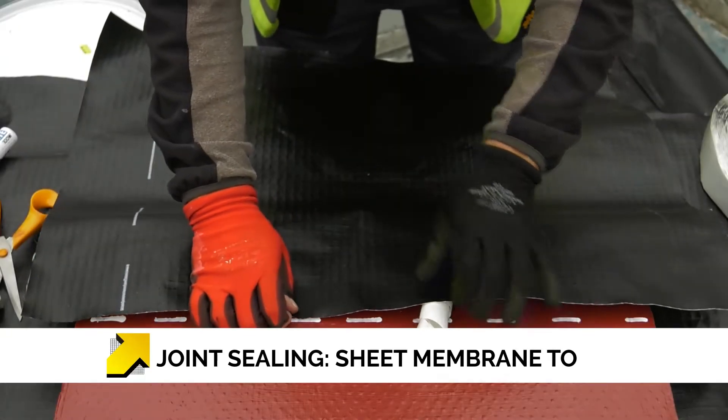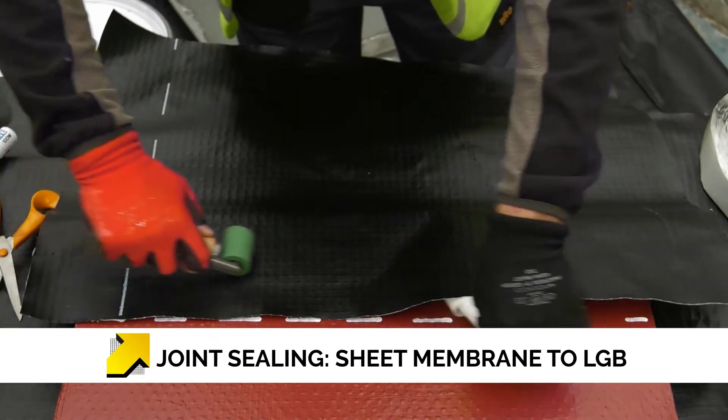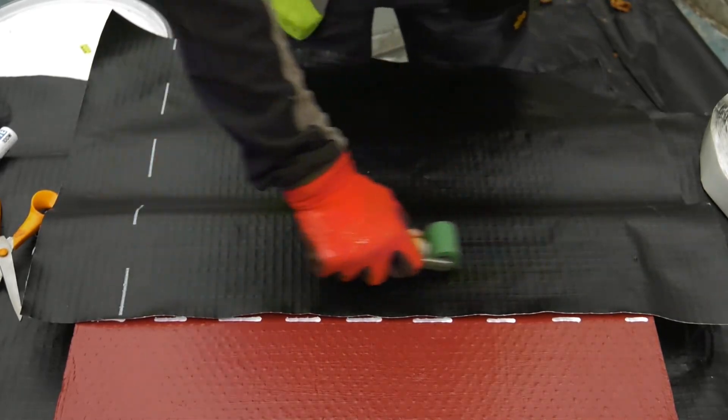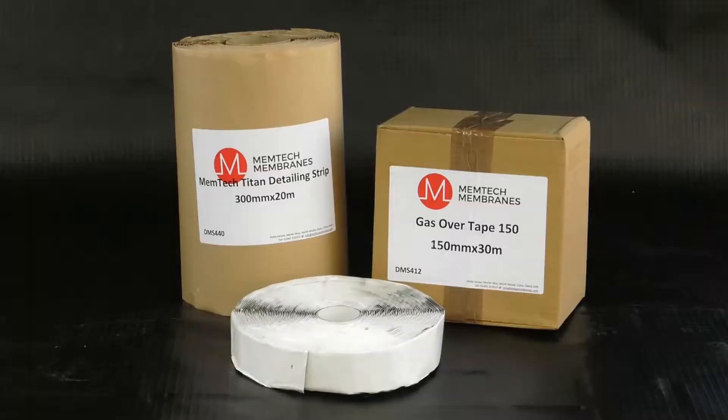Where Memtec Liquid Gas Barrier (LGB) has been used for detailing and there is a requirement to link this to a loose laid sheet gas membrane, then the Memtec Gas Tape 50 and Gas Over Tape 150 should be used to provide a suitable gas-proof seal.